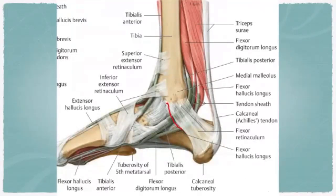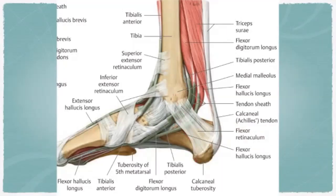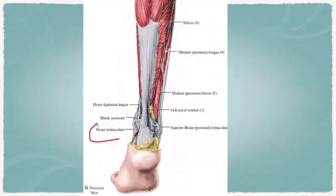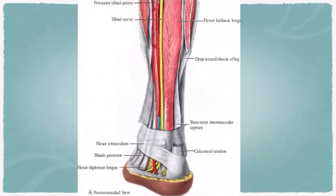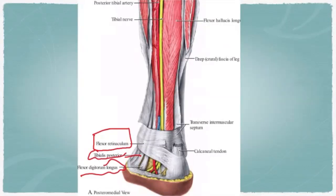The flexor retinaculum prevents bowstringing of the tendons of tibialis posterior, flexor digitorum longus, and flexor hallucis longus. All of these structures pass behind the medial malleolus. In the specimen, the flexor retinaculum can be identified, with tibialis posterior, flexor digitorum longus, and flexor hallucis longus all visible.